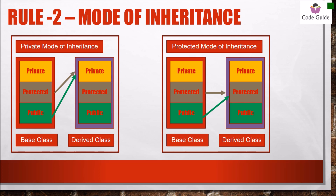Rule number two is the mode of inheritance. The mode decides which section will be derived to the next derived class. In case of private mode of inheritance, protected and public members become private members of the derived class, so accessibility works according to the access modes. In case of protected mode, protected and public sections become protected members of the derived class.